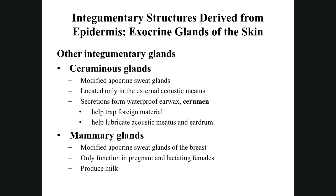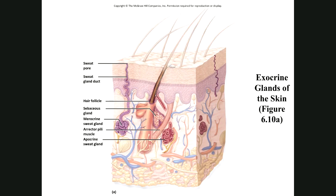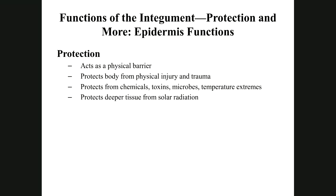Some other glands: ceruminous glands create cerumen — which is earwax. Mammary glands are actually modified apocrine glands that produce milk. These are modified underarm-type glands — milk is intended for babies. Since mammary glands are very close to the underarms, we can see that modification connection.